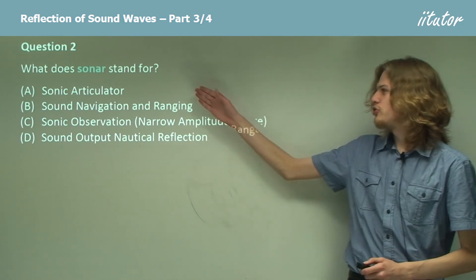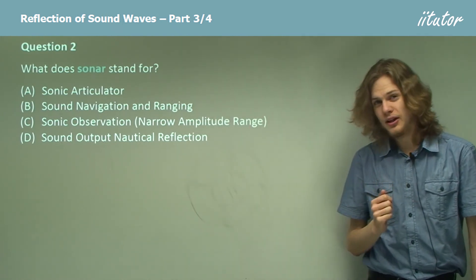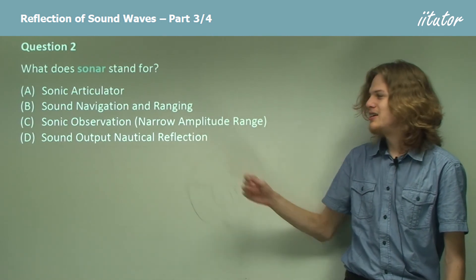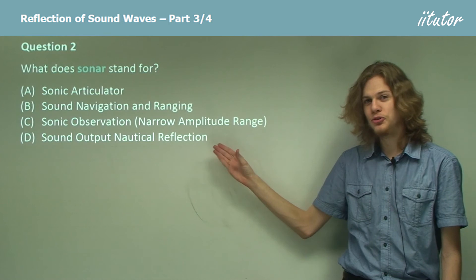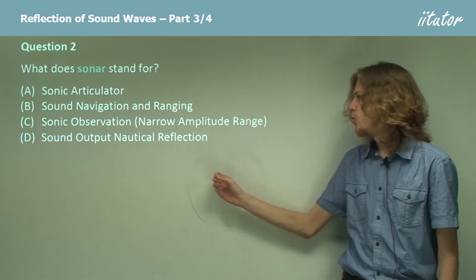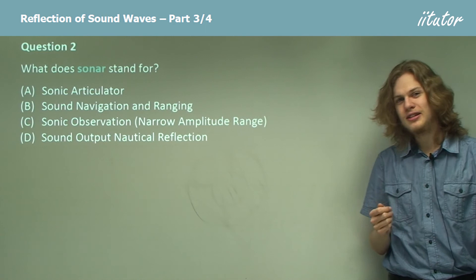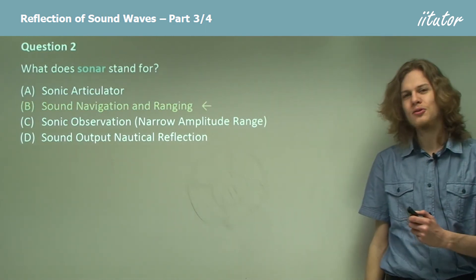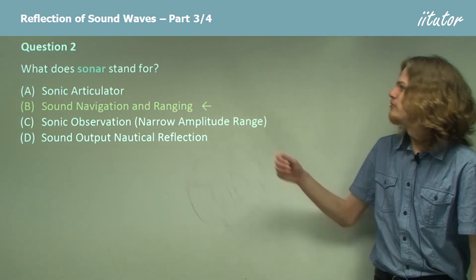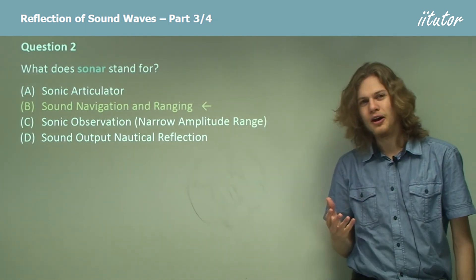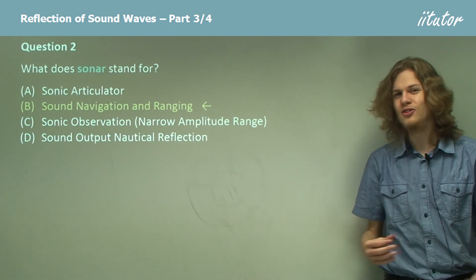Quiz question: What does sonar stand for? The options are: A) Sonic Articulator, B) Sound Navigation and Ranging, C) Sonic Observation Narrow Amplitude Range, or D) Sound Output Nautical Reflection. The answer is B — Sound Navigation and Ranging. It might be difficult to infer that from the letters, but people tend to use sonar as a separate word rather than as an acronym.